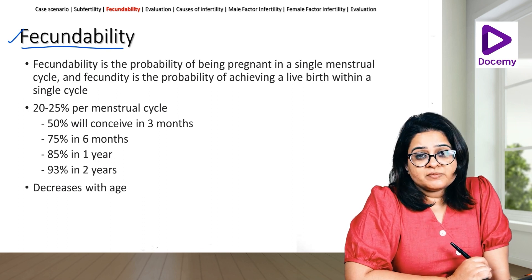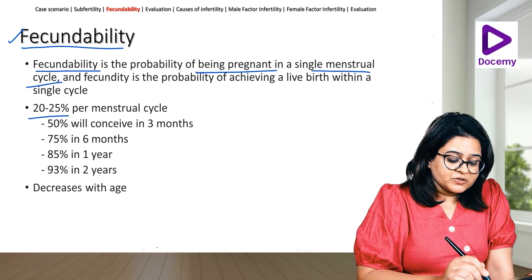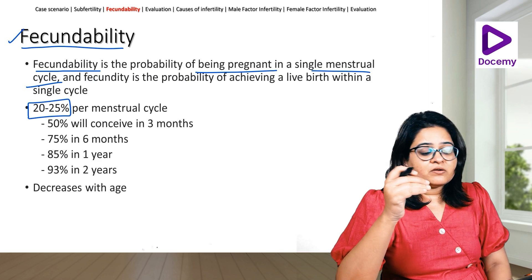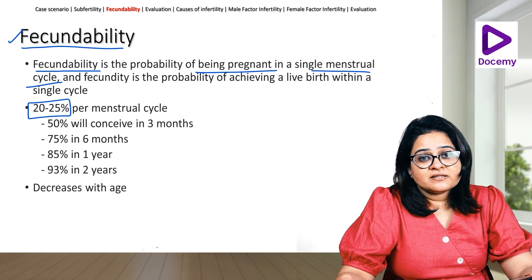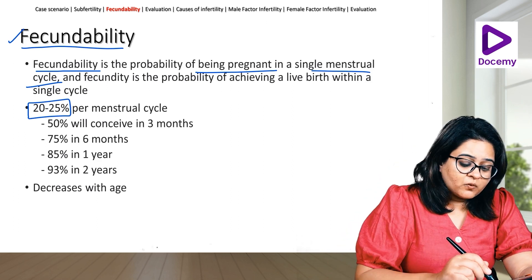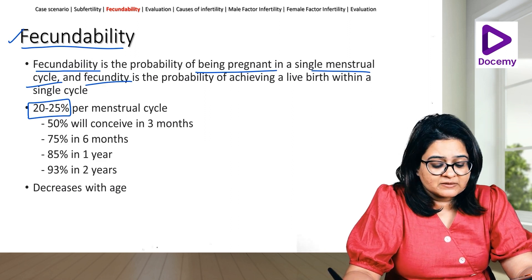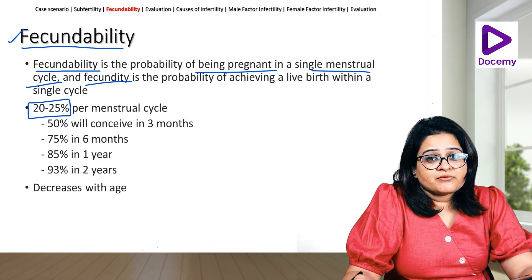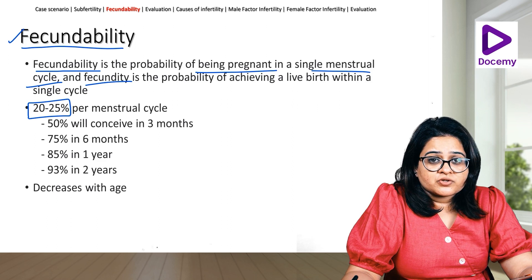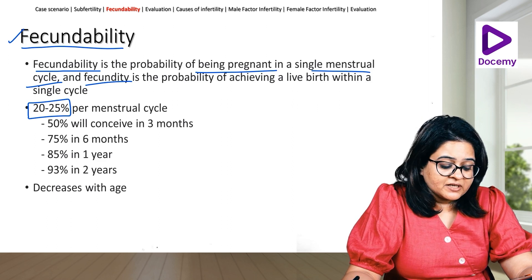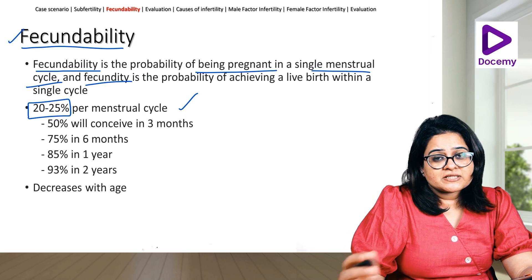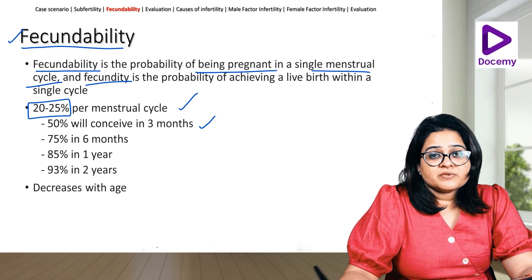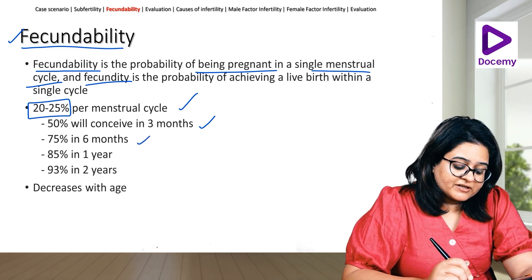There's another term you should know: fecundability. Fecundability is the probability of being pregnant in a single menstrual cycle, and this is said to be 20 to 25 percent. Fecundity is the probability of achieving a live birth within a single cycle, which is slightly lesser because you have to take into account miscarriages and abortions. So fecundability is 20 to 25 percent per cycle.